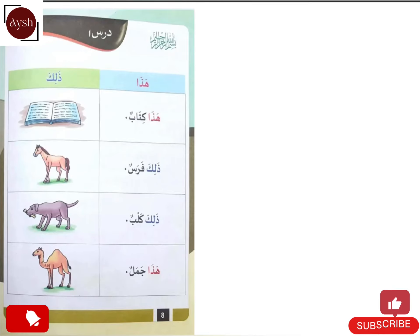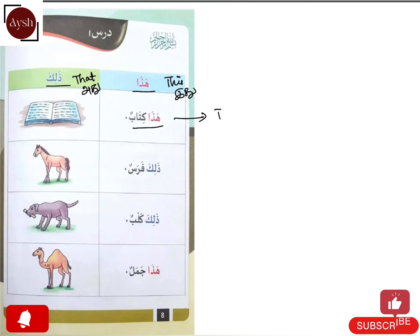Assalamualaikum. Minhajul Arabia, part one. First, 'haza' means 'this' and 'zalika' means 'that' — in Tamil, 'idu' and 'adu'. First example: haza kitabun — this is a book. Kitabun means book. In Tamil: idu puttagam agum.